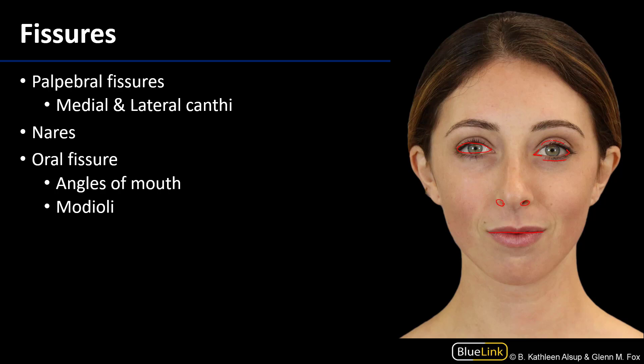For the mouth there's something analogous where we have angles of the mouth, and those angles of the mouth are controlled by the modioli. The modiolus is an interdigitation of fibromuscular tissue where muscles of facial expression are coming together.